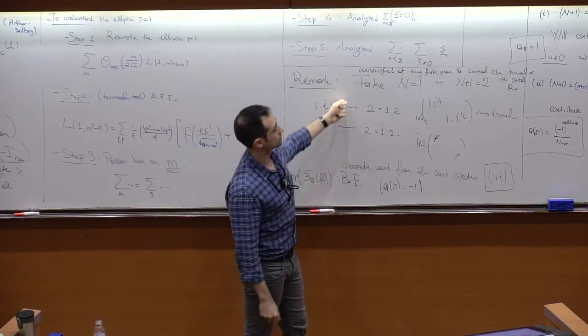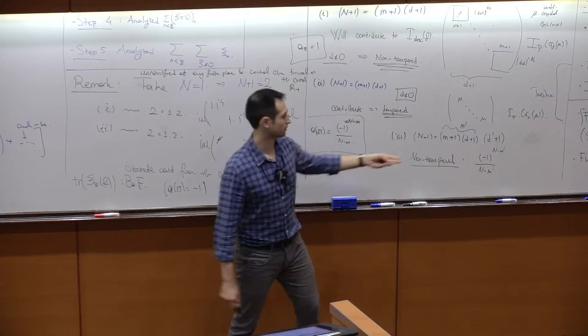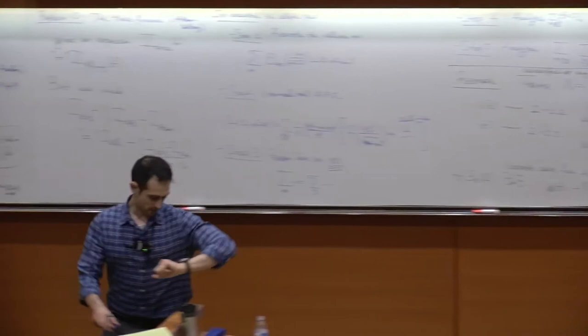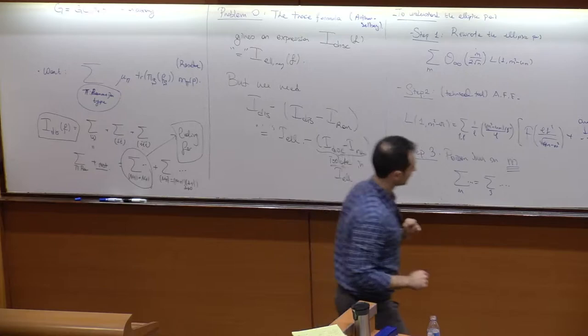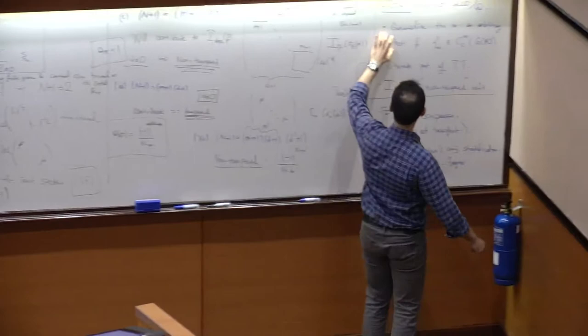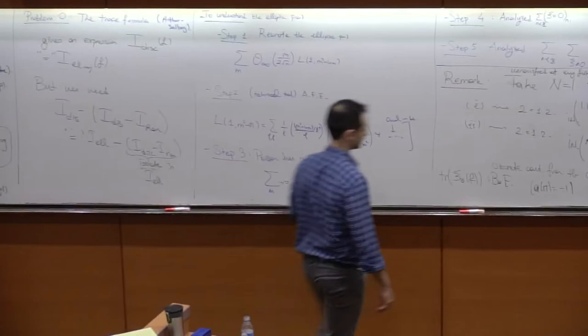For GL3, you also get contributions of this form. The first time type-3 contributions appear is at GL4, because you need extra factorizations there. Now that we've set the problem, let's see what we can do, specializing to GL2.